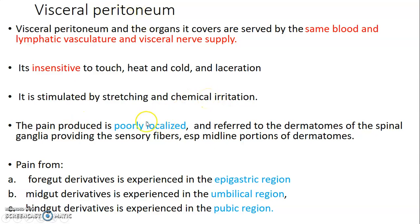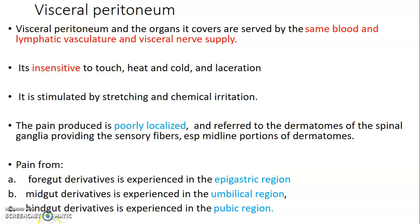Pain from the visceral peritoneum is poorly localized and will be referred to dermatomes corresponding to the spinal fibers. Pain from foregut derivative organs will be experienced in the epigastric region. Pain from the visceral lining of midgut derivatives will be referred to the umbilical region, and from the hindgut to the pubic region.